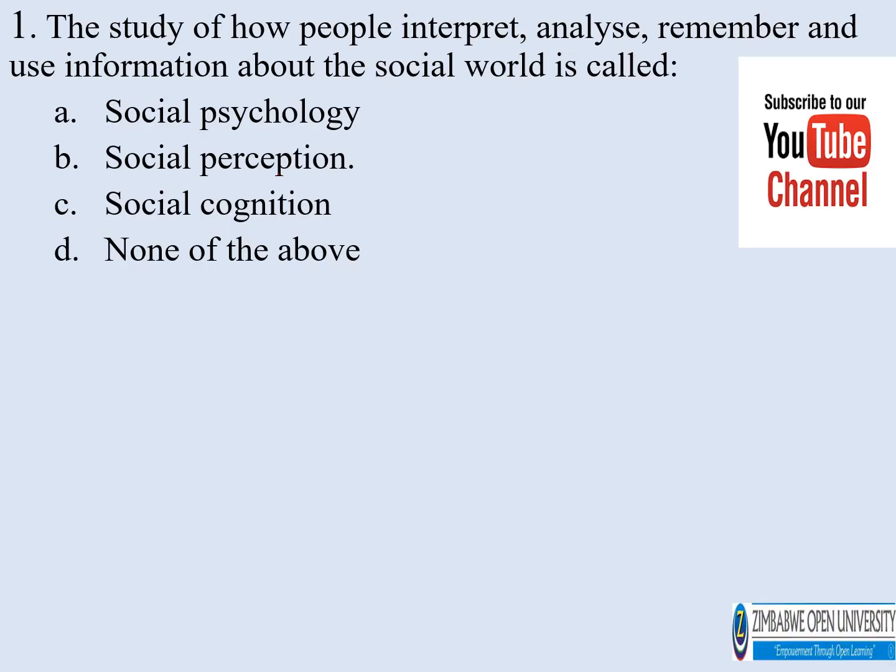Number one. The study of how people interpret, analyze, remember and use information about the social world is called: a) social psychology, b) social perception, c) social cognition, and d) none of the above. I think the correct answer is social psychology.